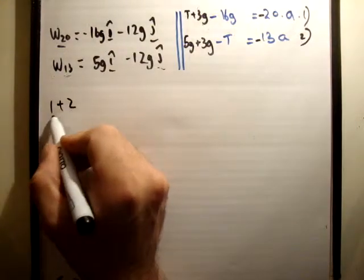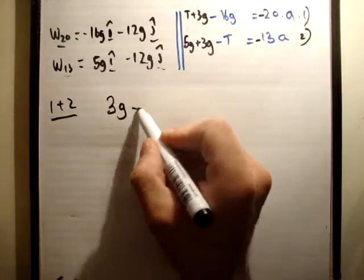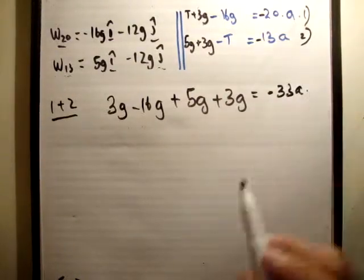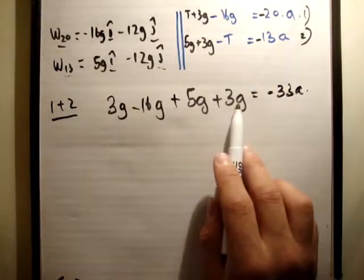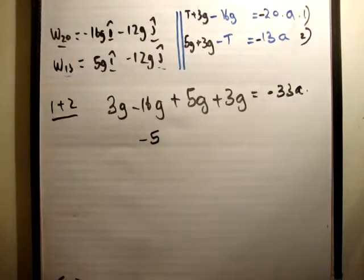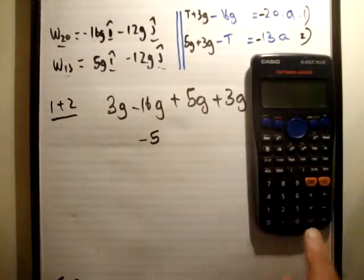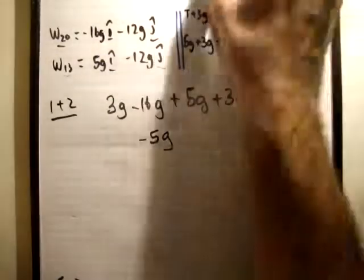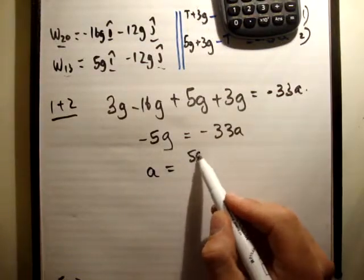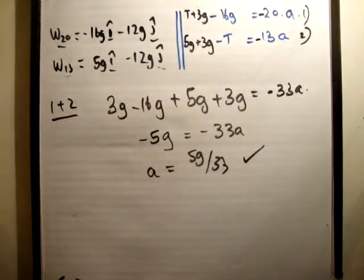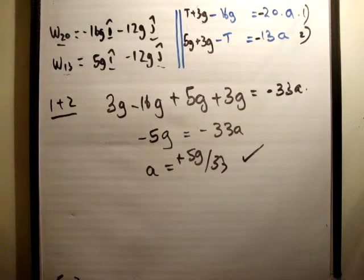So let's once again solve it by adding 1 plus 2. So the tensional forces cancel out, and we're going to get 3g minus 16g plus 5g plus 3g is equal to negative 33a. So 3 and 3 is 6. 5 is 11. From 16 is minus 5. I'm actually going to do this on a calculator, believe it or not. I feel kind of tired at the moment. So 3 minus 16 plus 5 plus 3. Yeah, so it's negative 5g is equal to negative 33a. Therefore, a is equal to 5g over 33. And I can tell you that that is correct. And we know we've got a positive number, which means the direction which we said it was going is also correct. So that's pretty straightforward. Thanks for watching. Please pass it on to your friends and subscribe to my channel.